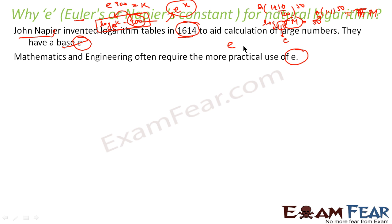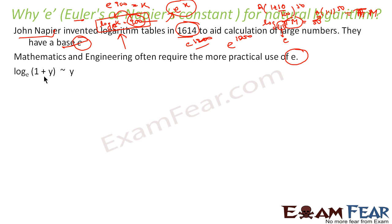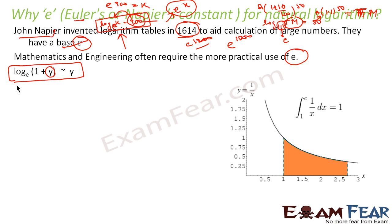As science and engineering grew, more practical uses of e appeared. We use log tables with base e for calculations like e^1000 or e^1200. Also, there are useful properties: log(1+y) to base e ≈ y when y is very small — a formula very helpful in physics.